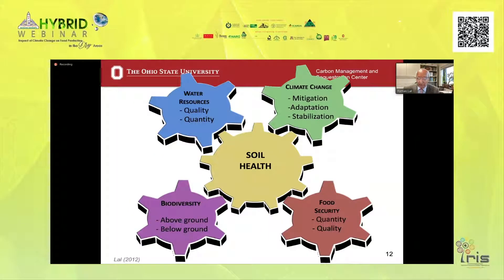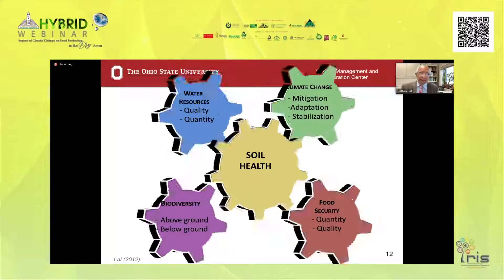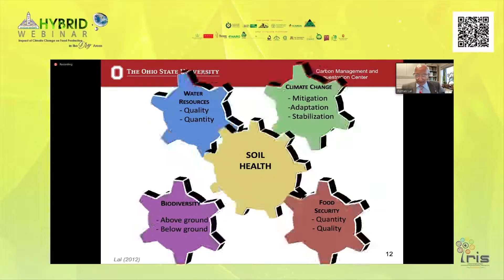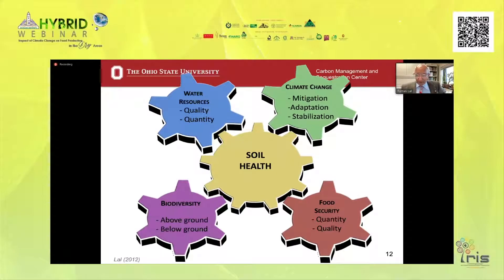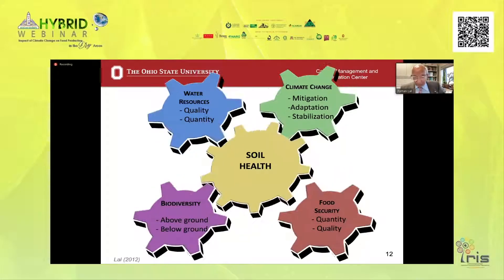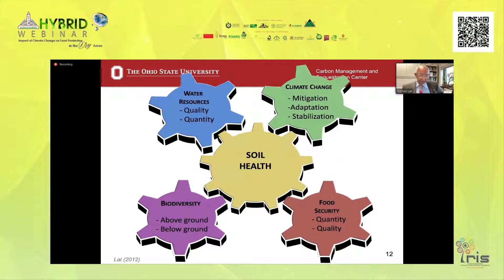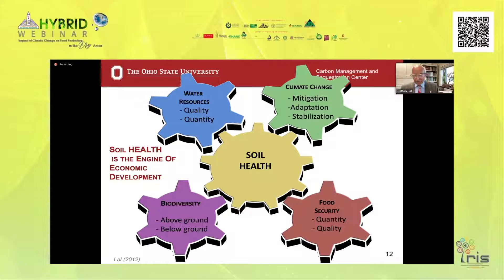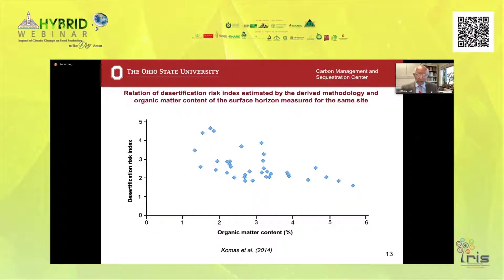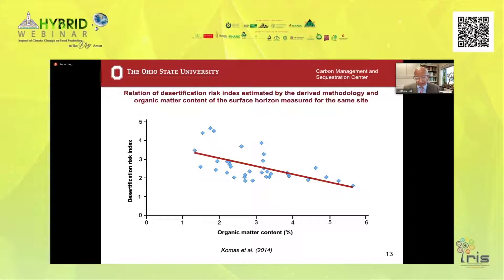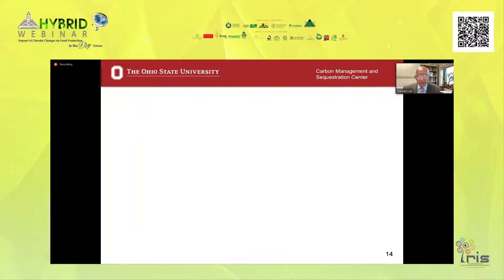Soil organic carbon is a very important component of soil health and determines many ecosystem services, such as water resources quality and quantity, climate change adaptation and mitigation, food security quality and quantity — especially nutritional quality, which is very important in developing dry land regions — and of course biodiversity. Soil health is the engine of economic development, and soil organic carbon is the heart of soil health. As the carbon concentration increases, the desertification risk decreases — a generic rule applicable everywhere.